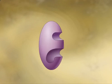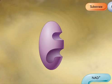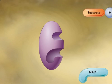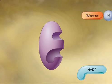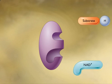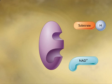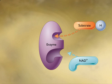Whenever a molecule is oxidized, another molecule must be reduced. During an oxidation-reduction reaction in the cell, an enzyme is involved in transferring the hydrogen to a coenzyme called NAD+. This enzyme has a binding site for both the substrate and NAD+.